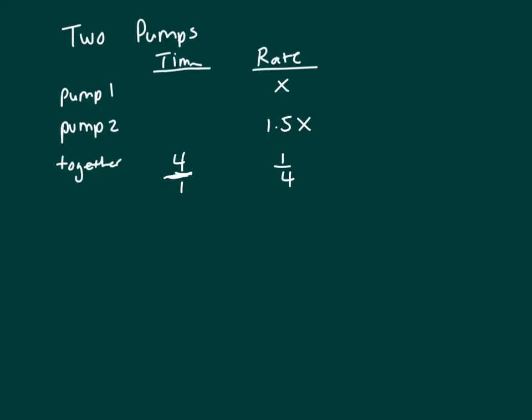So let's add our rates together to get our total. So rate one, first pump is x, and he's working with pump two, which is 1.5x, equals one-fourth.